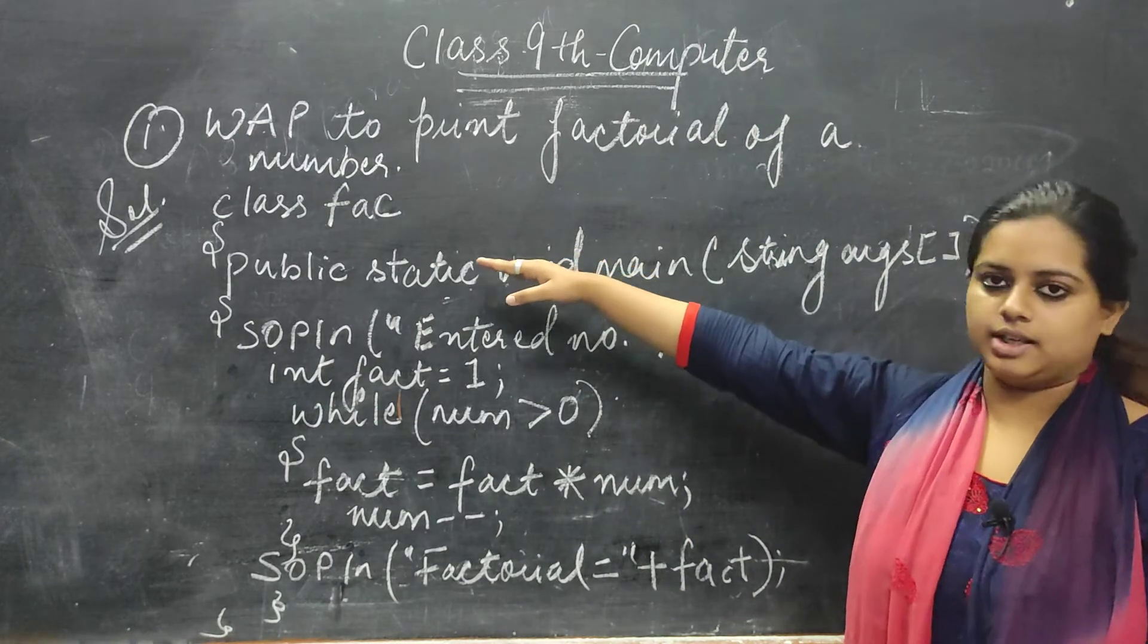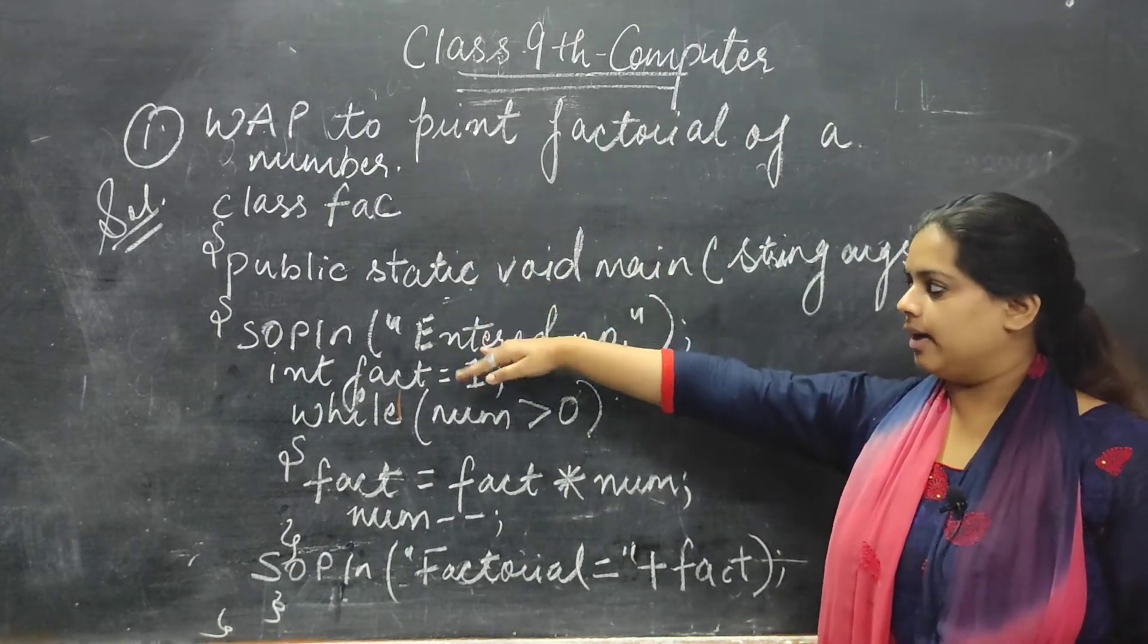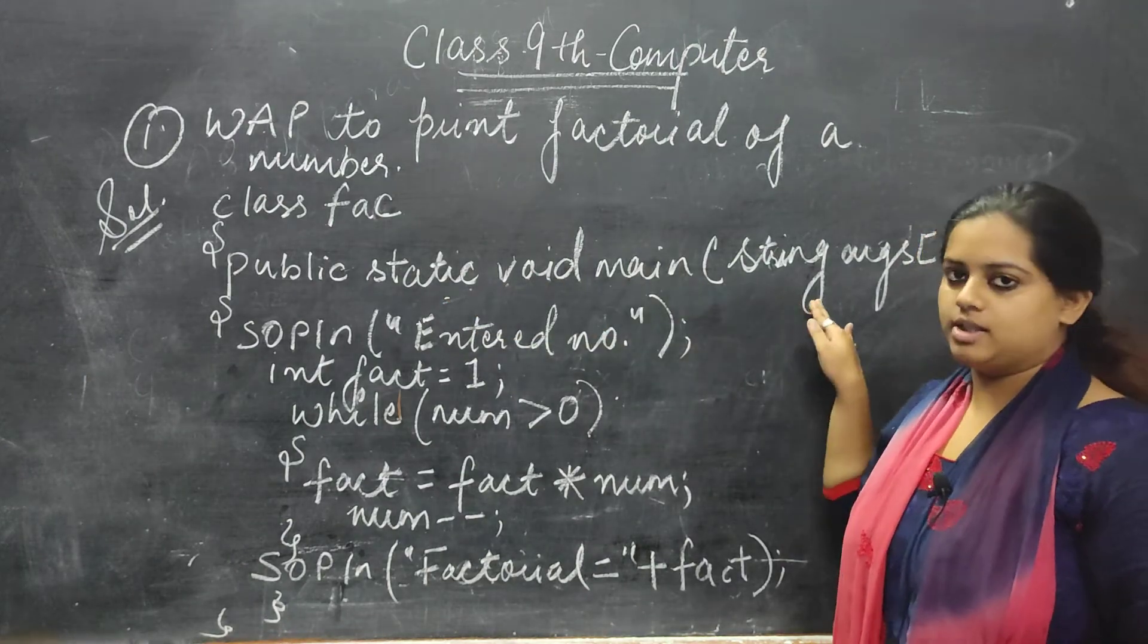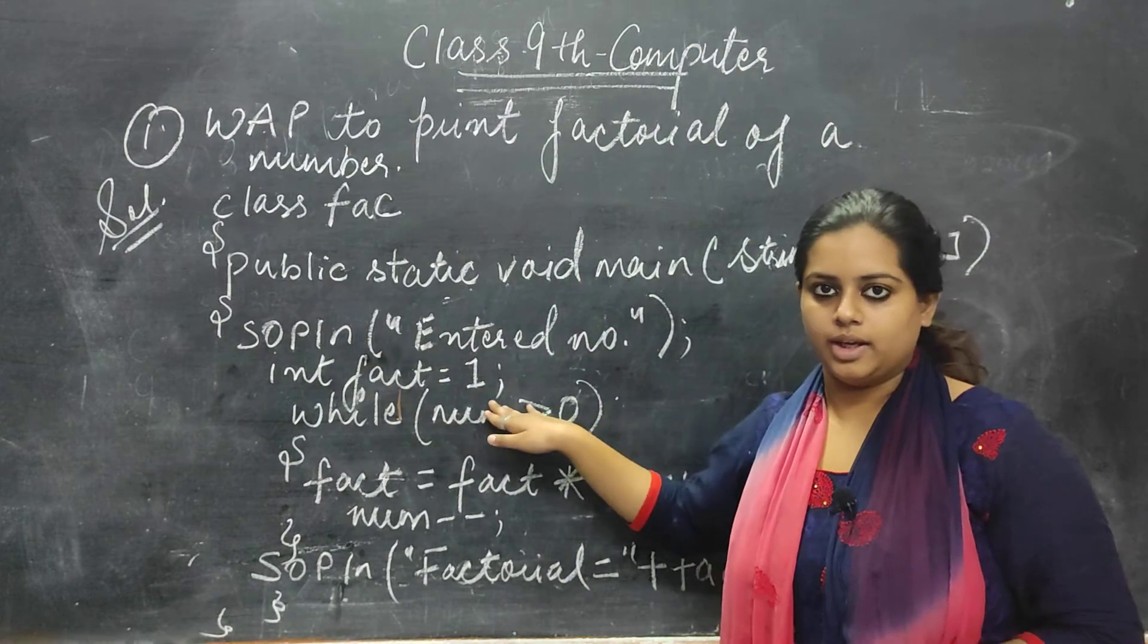Over here, initially I have taken the class as FAC, F-A-C, followed by public static void main string ARJS.